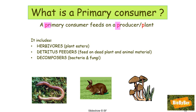A primary consumer feeds on a producer, or feeds on a plant. 'P' for primary, 'P' for producer, 'P' for plant. Your primary school is the first school you go to — a primary consumer is the first eater. Primary consumers include herbivores which eat plants, detritus feeders which feed on dead organic matter (things like dung beetles and woodlice), and decomposers which are the bacteria and fungi of decay. The earthworm is a detritus feeder, the rabbit is a herbivore, and toadstools are fungi and would be decomposers.